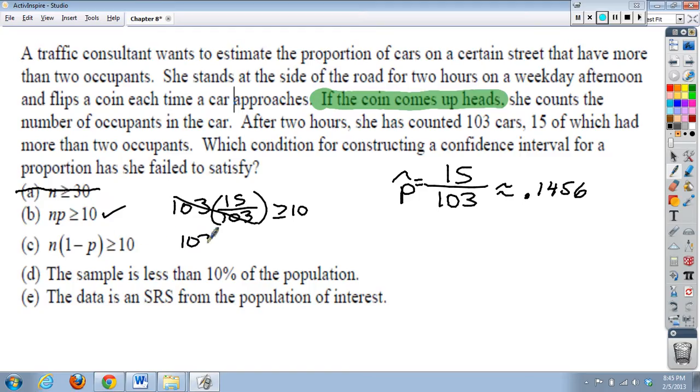Even if I did this, 103, and then 1 minus 15 over 103, I still will get, let's see, basically I need to take 103 minus 15, and that's going to give me, what, 88? That's what this number will be, which is definitely greater than or equal to 10.